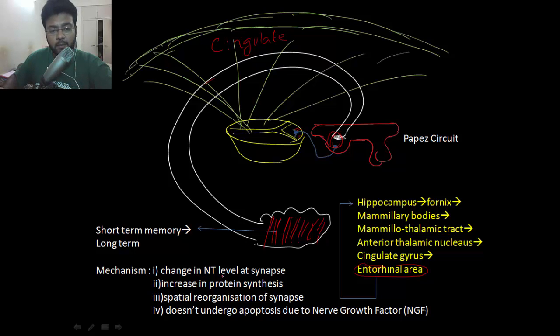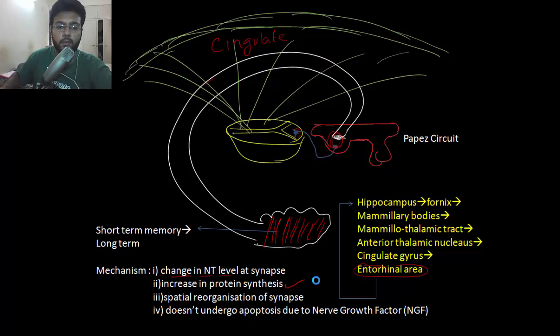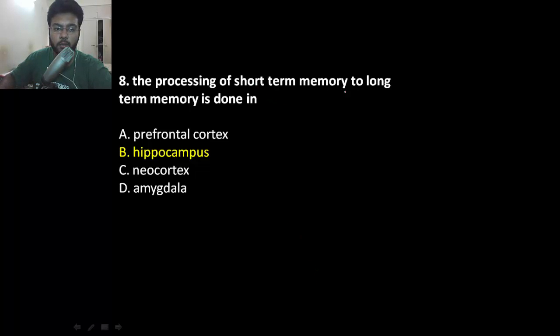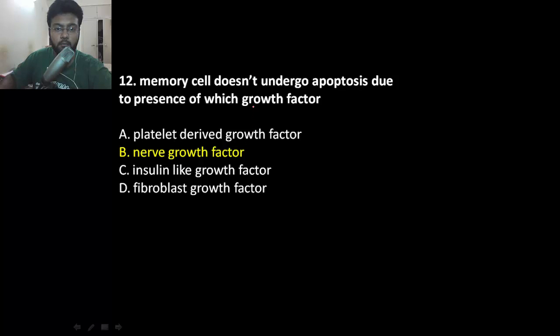One mechanism is change in neurotransmitter level at the synapse. There is also increased protein synthesis and spatial reorganization of synapse. The memory cell won't undergo apoptosis due to nerve growth factor. The neurons are saved from apoptosis during processing of short-term memory into long-term memory by hippocampus.